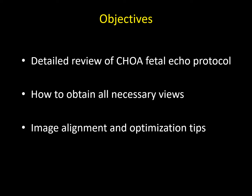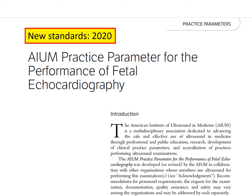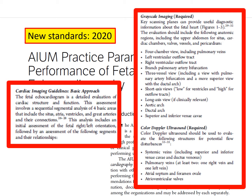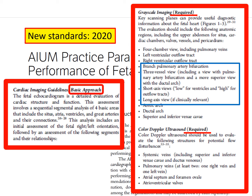I wanted to highlight some changes that the AIUM instituted in their standards, collaborating with the American Society of Echo (ASE) in 2020, coming up with a revision for the basic approach for the cardiac scan in the fetus. They made it part of required imaging: the branch pulmonary artery bifurcation, three-vessel view including the three-vessel tracheal view, short-axis views of the ventricles for low and high outflow tracts, as well as long-axis sagittal views if clinically relevant, including color Doppler ultrasound.